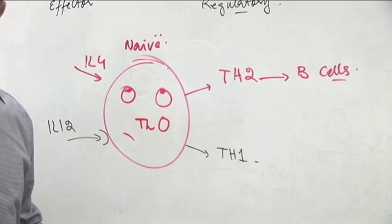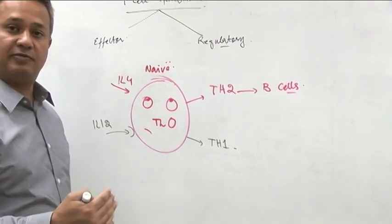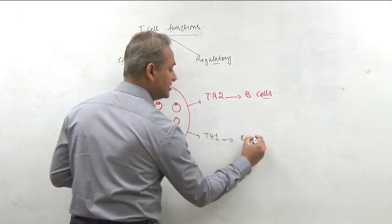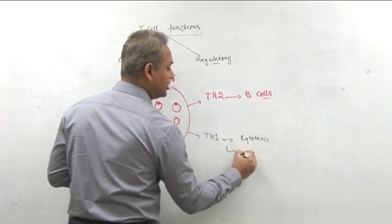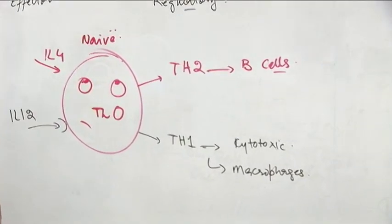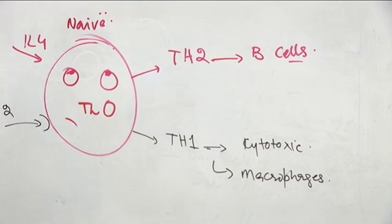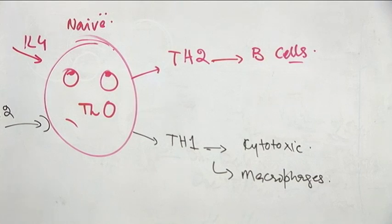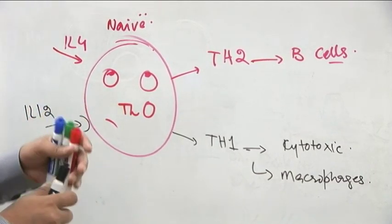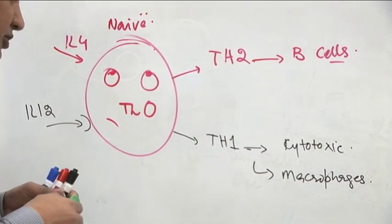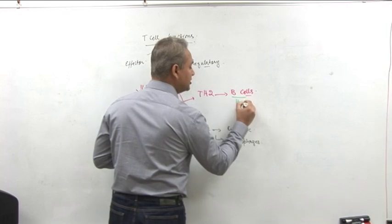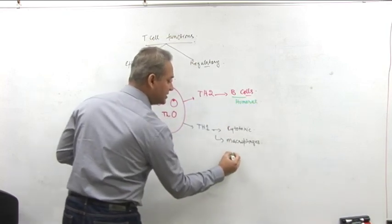It is a dynamic behavior — the naive cell is not committed. T-helper 1 works on many effector cells such as cytotoxic T-cells and macrophages, and has influences on eosinophils. T-helper zero becomes T-helper 2 with IL-4, or T-helper 1 with IL-12, and they have different outcomes. The B-cell action is the humoral response, and cytotoxic action is the cellular response. Our immune system can react in two ways: either via humoral response or via cytotoxic response. It is the T-cell which decides which way the immune system goes.